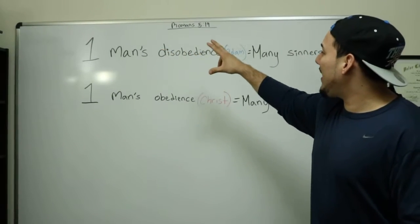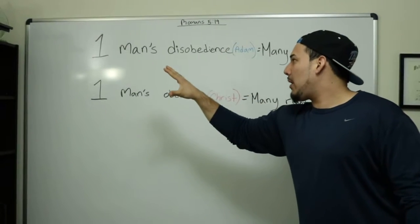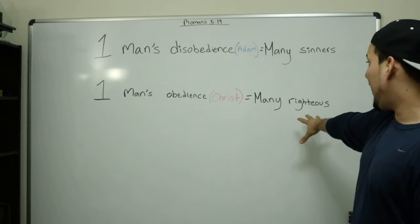Romans 5:19 says that by one man's disobedience, which was Adam, many were made sinners. And then it says that by one man's obedience, which was Christ, many will be made righteous.